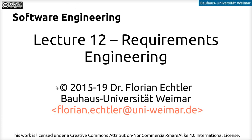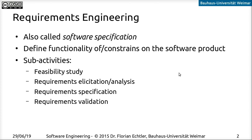Welcome back to software engineering. Today we're going to talk in more detail about requirements engineering. We already briefly covered this at the very beginning when we talked about the fundamentals. Requirements engineering is a fundamental part of the software development process, sometimes also called software specification. The core idea is that we need this step to initially define what our software product should contain in terms of functionality, and also what constraints are to be observed. There are usually a couple of sub-activities: the feasibility study, then the requirements analysis and elicitation, then the specification of the requirements, and finally validation.